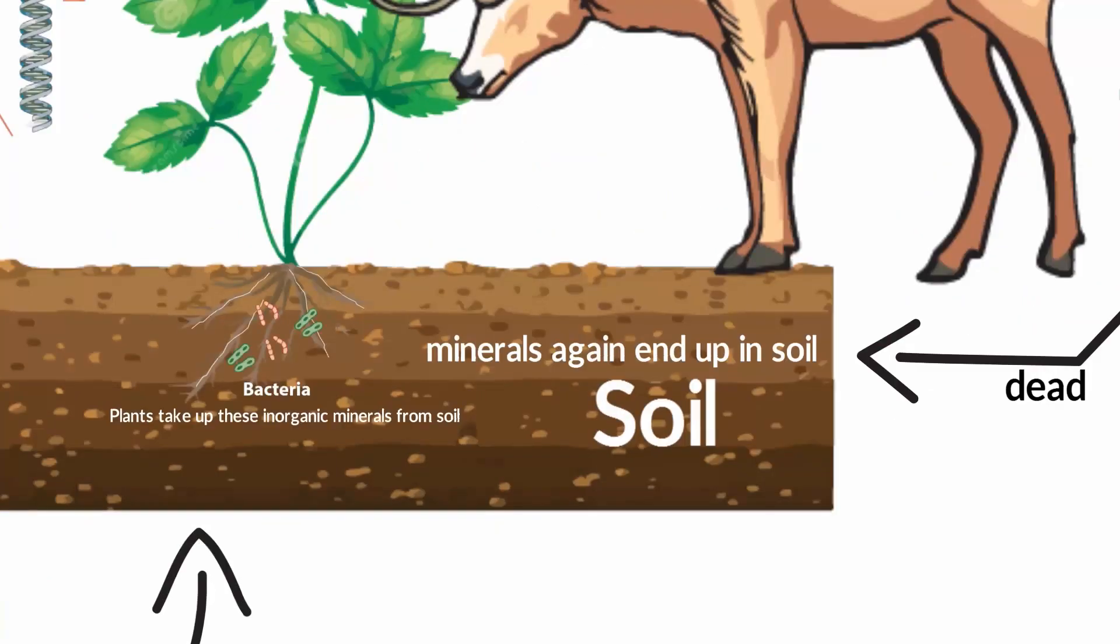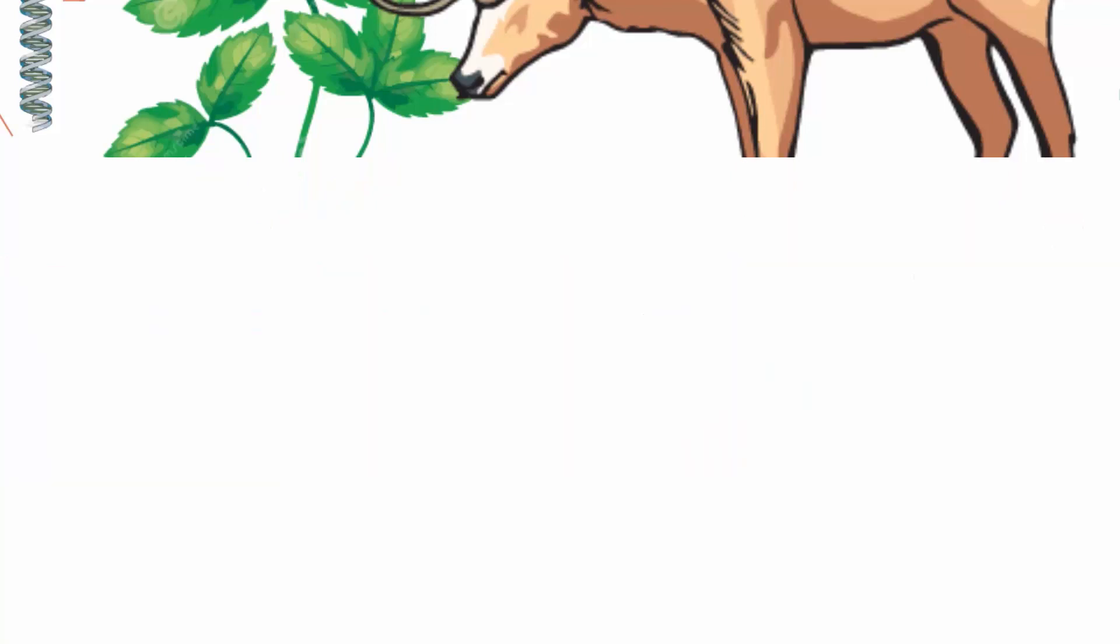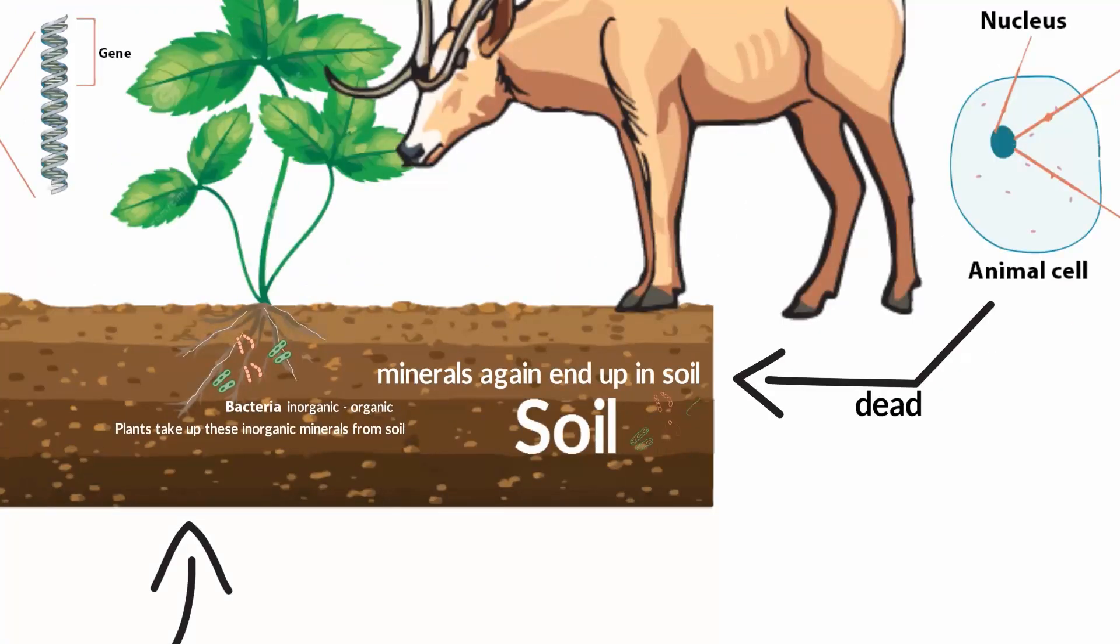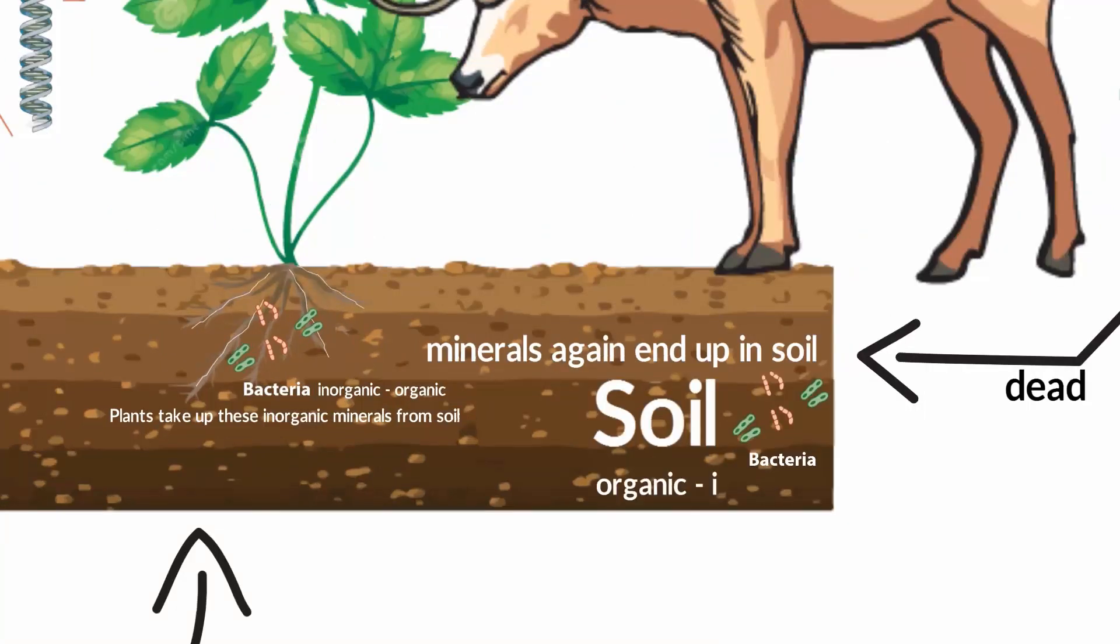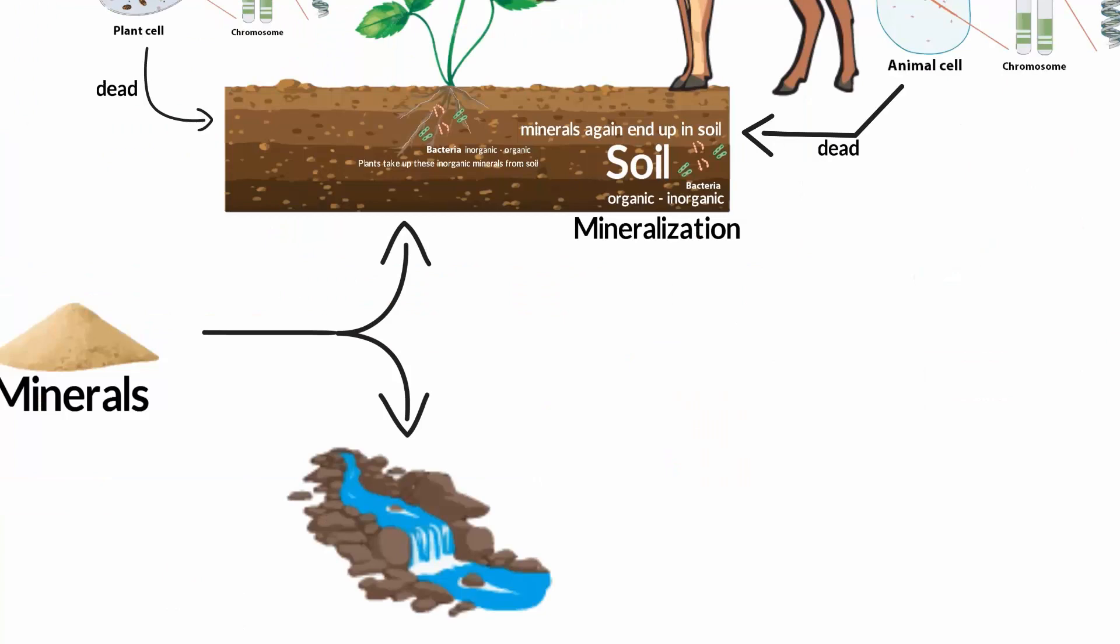So, it is the bacteria that converts these inorganic minerals that come initially from rocks into organic minerals which are then consumed by plants and animals. And when the plants and animals die, bacteria break down these organic minerals again into inorganic form. This process is known as mineralization. And that's how these inorganic minerals end up in soil, river and ocean.